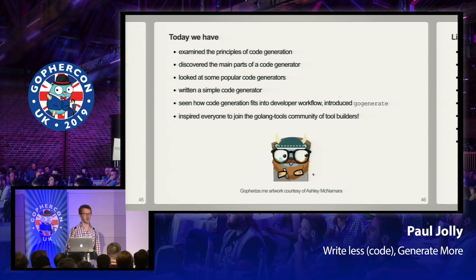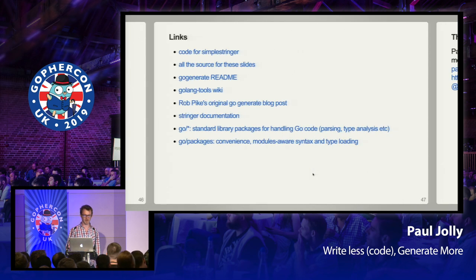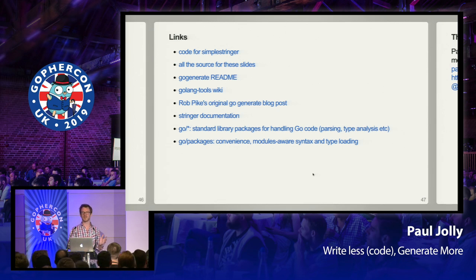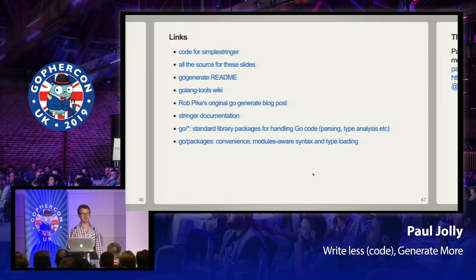Quick recap: we've examined the principles of code generation, understood how a code generator is structured, looked at popular code generators, written a simple code generator as a template for others, seen how it fits into a development workflow, and seen how it will fit in when code generation gets integrated with gopls. Hopefully we've also inspired everybody to join the Golang Tools community. Thank you very much to the organizers — please make sure you thank them for running GopherCon UK.